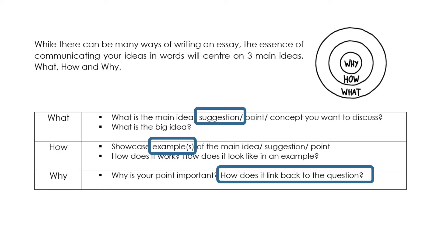There are many ways of answering essay questions. Some of you use PEEL — point, example, elaborate and link. But for social studies, we want to make it a bit easier. We are looking at the what, how, and why. When we talk about 'what', we are looking at suggestions. 'How' refers to examples. And 'why' is really about how we link back to the question. Today we're going to unpack how the what, how, why looks when we write it out.